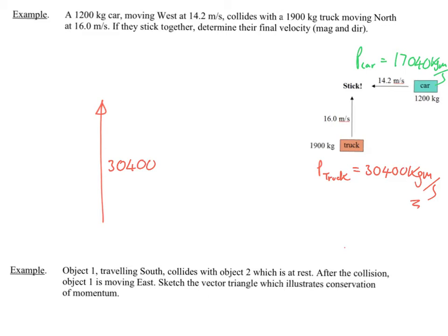And then my green arrow, my car vector arrow, remember has to go tail to tip. So the tail has to begin at the tip of the red arrow. And that means that it's going to go this way. And it's going to be 17040.